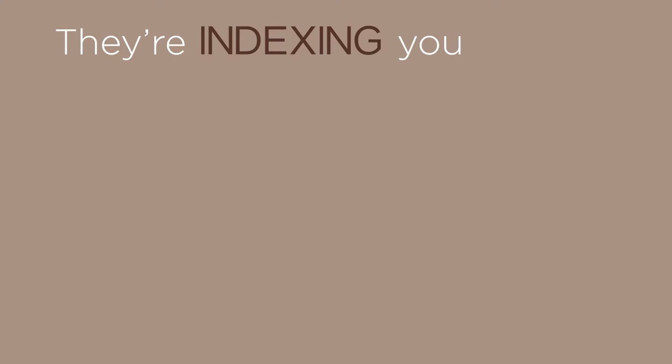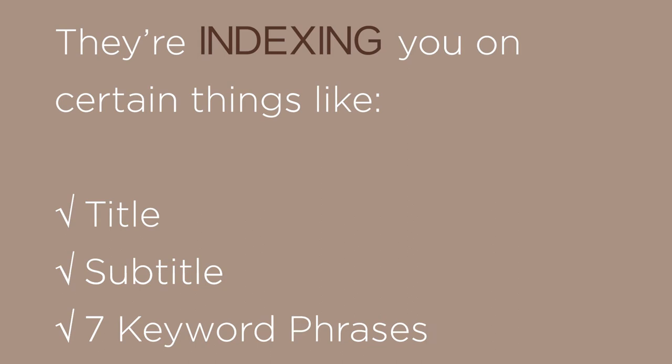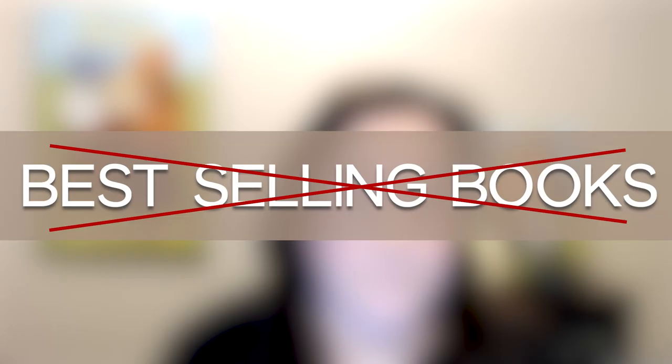By targeting a phrase and using Amazon Ads, Amazon gets to know the types of phrases that apply to your book — and they get better and better the longer they serve your ads. When you first list a book, they index you on things like your title, subtitle, and the seven keyword phrases you list. But with Amazon Ads, you get to target much more broadly. In the ad platform, you can target anyone and drive people to your ad.